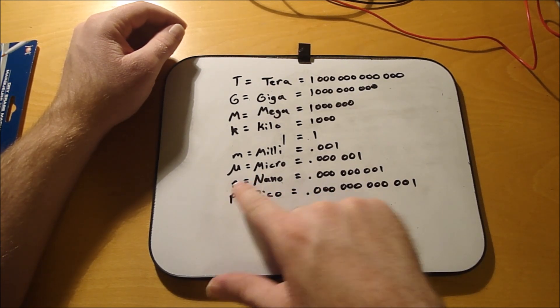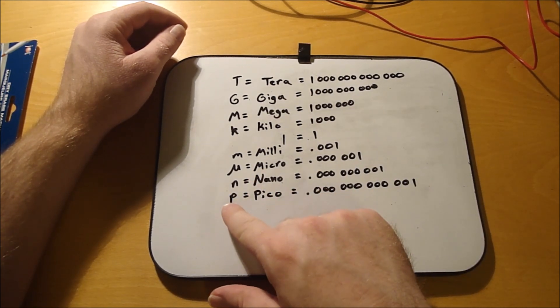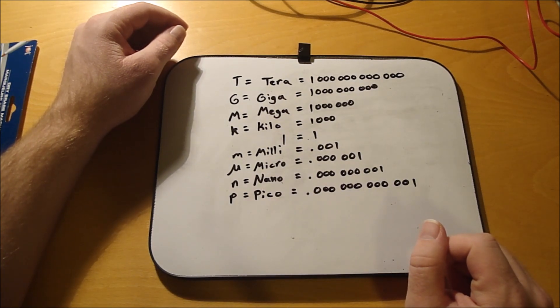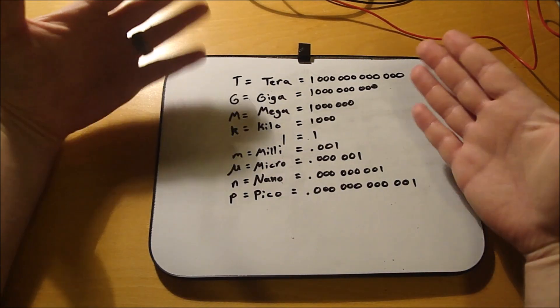One nano is a lowercase n, and one pico is a lowercase p, and then there is all the values.